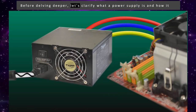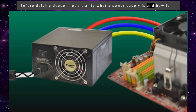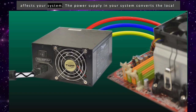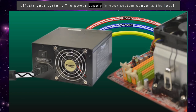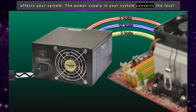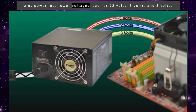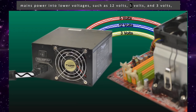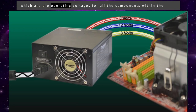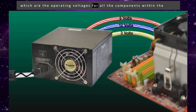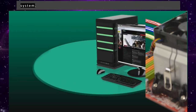Before delving deeper, let's clarify what a power supply is and how it affects your system. The power supply in your system converts the local mains power into lower voltages, such as 12 volts, 5 volts, and 3 volts, which are the operating voltages for all the components within the system.